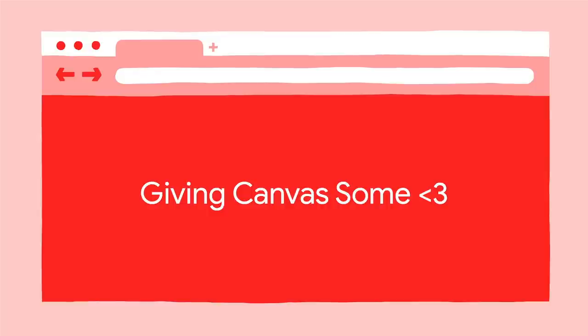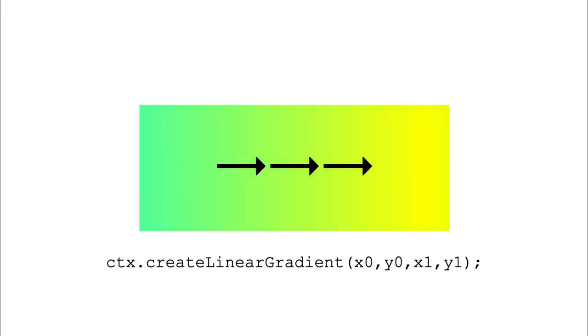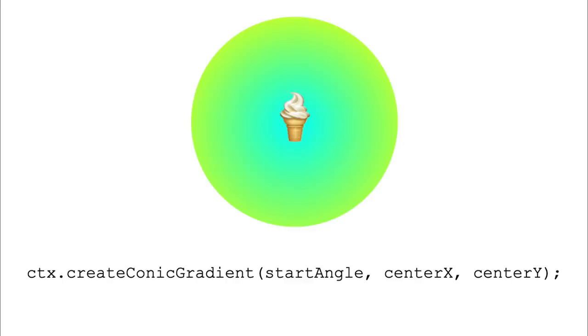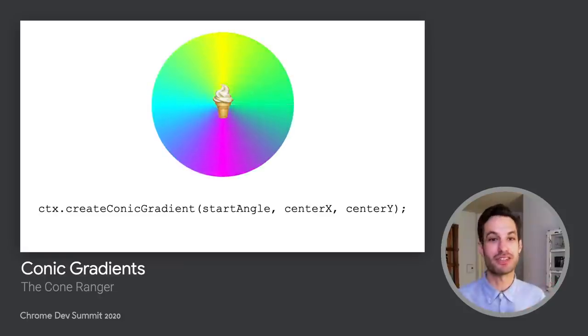Part one: showing Canvas some love. We're working on catching up to CSS. We've been paying attention to the most common requests from developers for missing features and have added a few. The first is conic gradient. You've seen linear gradients, you've seen radial gradients — how about a nice conic gradient? Your color pickers need not be static images any longer.